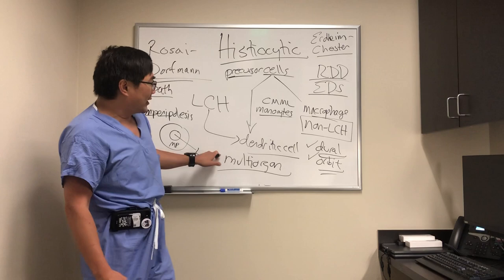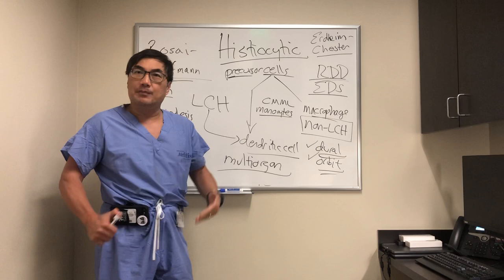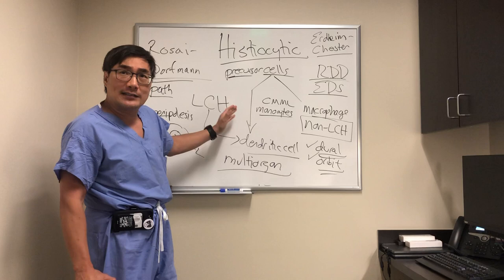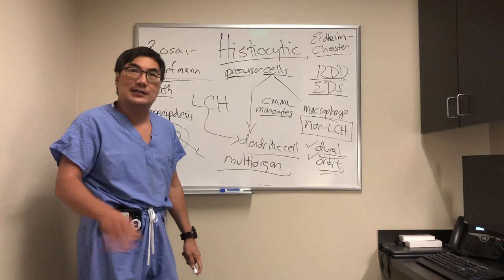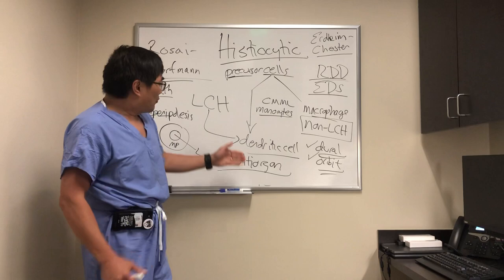Langerhans cell histiocytosis can occur in different organ systems — retroperitoneal, like in Erdheim-Chester, or really anywhere in the body. When you look at the chart and see multiple organ systems with infiltration — lymphadenopathy, retroperitoneum, perinephric — you should be thinking this may be an infiltrative neoplastic process, benign or malignant. The Langerhans cell type used to carry names like Hand-Schüller-Christian disorder, associated with diabetes insipidus, and Letterer-Siwe disease, a fatal juvenile form. But we no longer use those names — we call them all Langerhans cell histiocytosis.